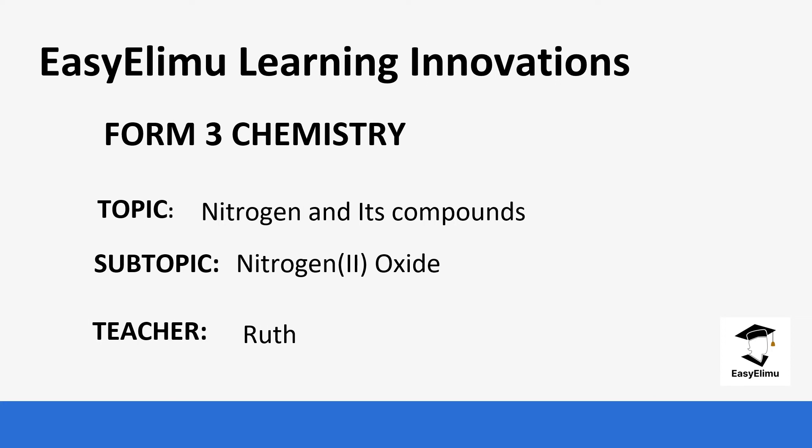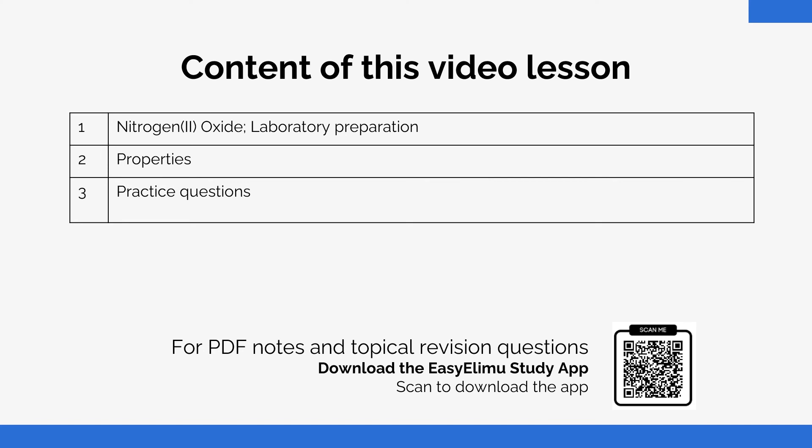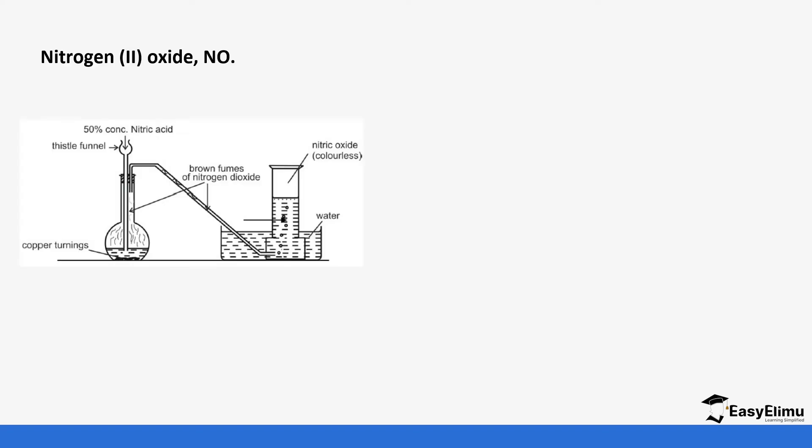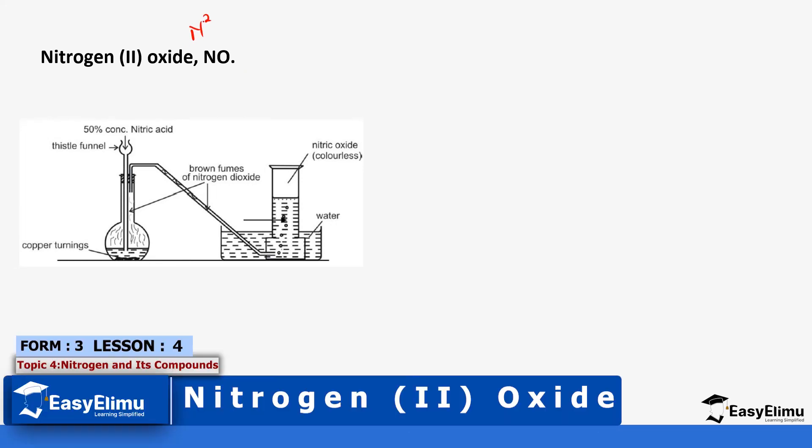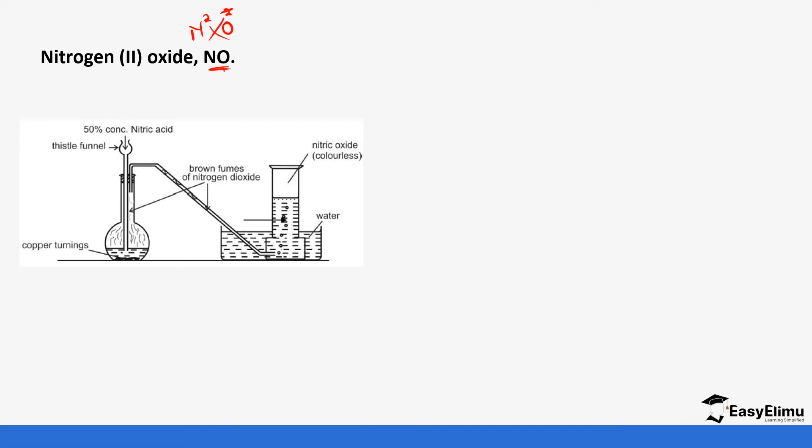For this lesson we are going to be focusing on nitrogen (II) oxide. We'll look at the laboratory preparation and some of the physical and chemical properties, and then you will do a question. This is nitrogen (II) oxide, remember that 2 is the oxidation number of nitrogen and oxygen oxidation number is -2.